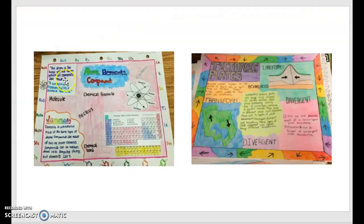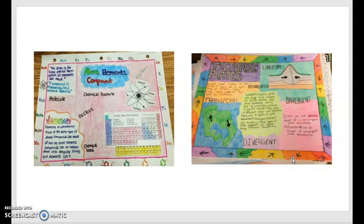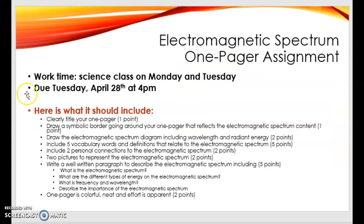If you take a look here, both of these have borders going around them. The first one relates to atoms, elements and compounds because it has examples from the periodic table, elements and compounds. And then over here on the right, this one also has a symbolic border with the arrows in the different colors and the jaggedy lines, because that has to do with tectonic plates. So you want to think of a symbolic border that would make sense for the electromagnetic spectrum.